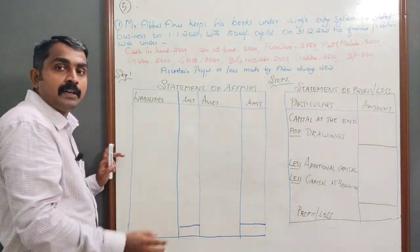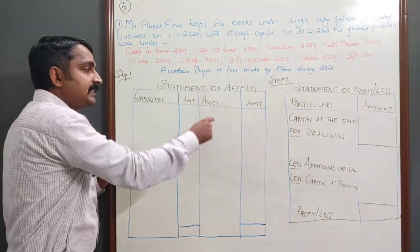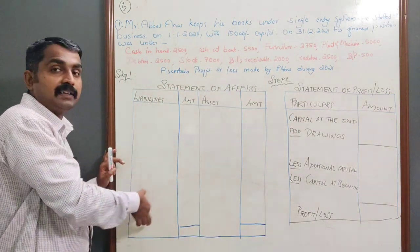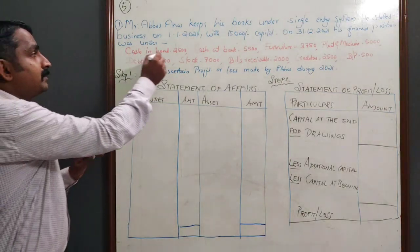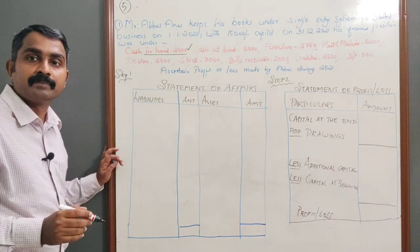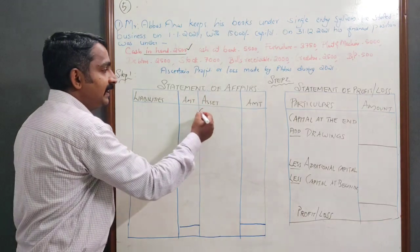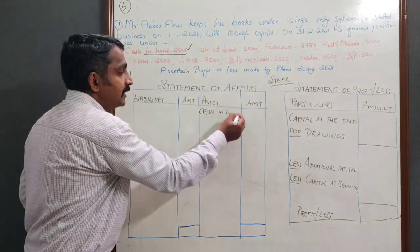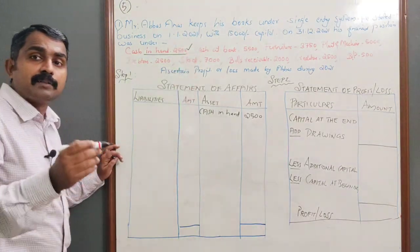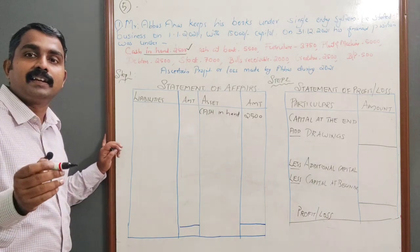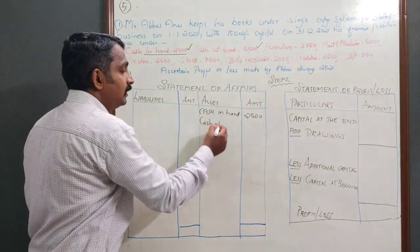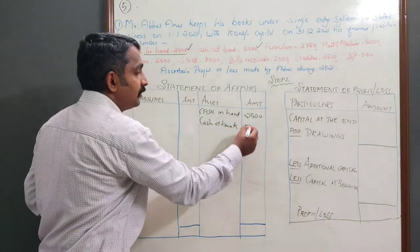On the asset side, the first item is cash in hand. Then cash at bank — bank is an asset. Cash at bank is 5,500.